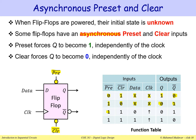When both preset and clear are inactive (both equal to 1), the flip-flop operates normally. If D is 0, we wait for the rising clock edge and Q becomes 0. If D is 1, we wait for the rising edge and Q follows D. Q-bar is always the complement of Q.